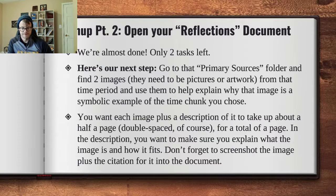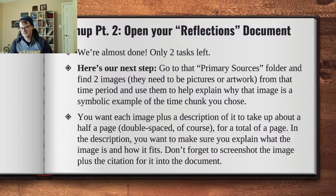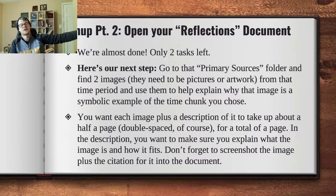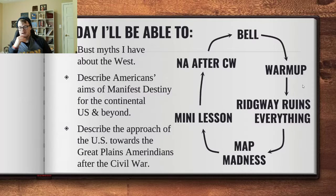Use them to help explain why each image is a symbolic example of the time chunk you chose. So for example, let's say that you chose 1800 to 1850 and you have a picture of a steamboat — why would a steamboat be a symbolic example of the time chunk you chose? What you're making here is the image plus a description of it. You want to explain what the image is, say why it fits, and why it's symbolic of this time period. Each one of those should be about half a page, give or take. And don't forget to screenshot the image plus the citation for it into the document, because we will do some stuff with that later.